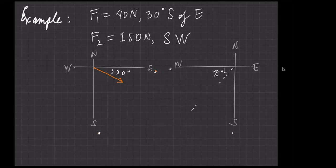Let's draw vector F2. This is not to scale, just an approximation. F2 points southwest and F1 points southeast. Both forces are directed downward — they both have a southward component. Since F2 is longer, you expect the sailboat will move more toward the south. Now you can visualize the problem.